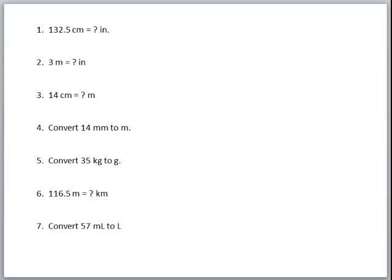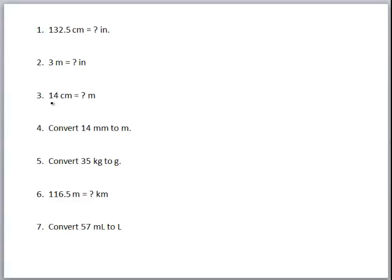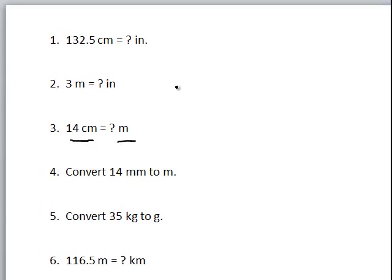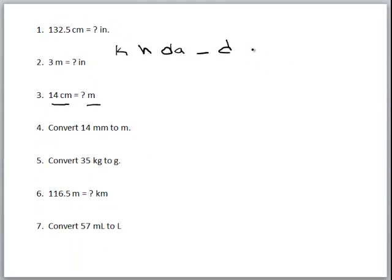Let's go over some metric conversions. Anytime you're going to do a metric conversion, unless you have it memorized, you want to put your King Henry Died Drinking Chocolate Milk prefixes up there — the middle being the base unit, and then we have deci, centi, milli, deca, hecto, and kilo. Remember, there's a factor of 10 between each unit. You use that to know how many places to move the decimal, but also how many of each unit there are in another unit.